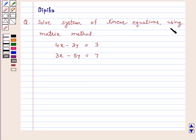Solve system of linear equations using matrix method: 4x minus 3y is equal to 3, 3x minus 5y is equal to 7. Let's start the solution.